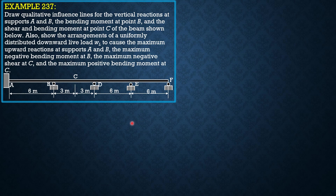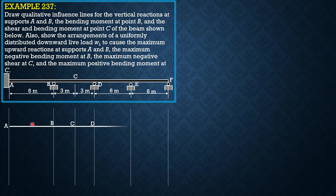Here is the given beam. For the positive vertical reaction at A, by the Müller-Breslau principle, we replace section A by a mechanism such that it cannot resist upward movement, but there is still resistance to moment as shown. By pushing this section A upward, the corresponding deflected shape would look like this, and that would be the qualitative influence line for the vertical reaction at A.